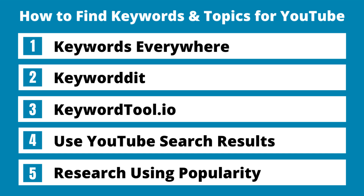There are five different things that I use: Keywords Everywhere, Keyword It, and KeywordTool.io are all free keyword research tools. You can also use the Google Keyword Planner, but I'm not going to cover that in this video. I'm focused on these three keyword research tools, plus how to use the YouTube search results and how to research using popularity — both popular topics and things that fit into your YouTube channel.